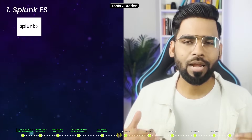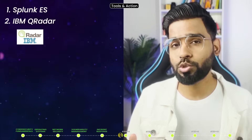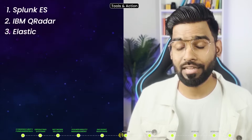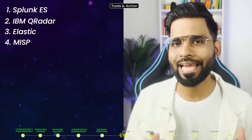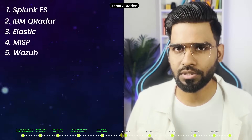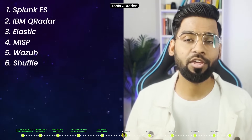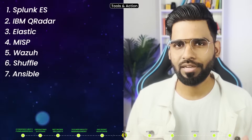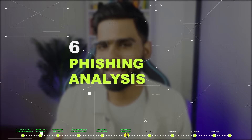For incident response tools: Splunk Enterprise Security is a commercial SIEM that also provides a trial license. IBM QRadar is a SIEM with a community edition. Elastic is a powerful SIEM solution. MISP is an open-source threat intelligence gathering platform. Wazuh is an open-source security monitoring solution. Shuffle is an open-source security automation platform. Ansible is also used for security automation.